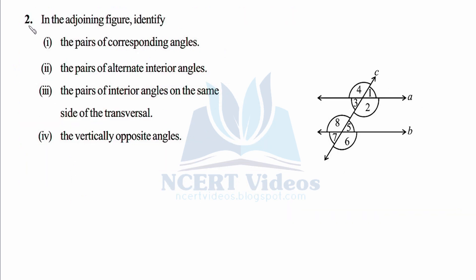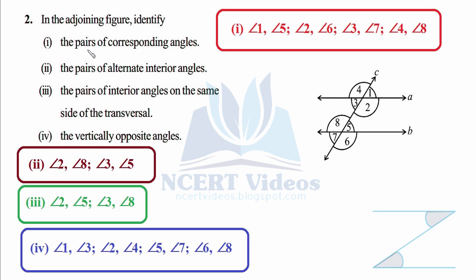Question two: in the adjoining figure, we have to identify pairs of angles. Lines a and b are considered parallel, and line c is the transversal cutting them at two distinct points. A transversal is a line that cuts any two lines at distinct — meaning different — points. The corresponding angle pairs are: one and five, two and six, three and seven, four and eight — giving us four pairs.